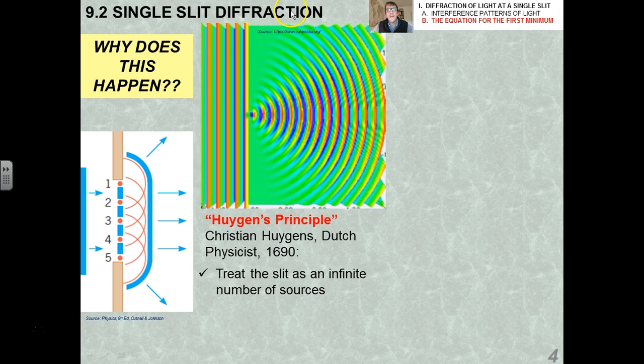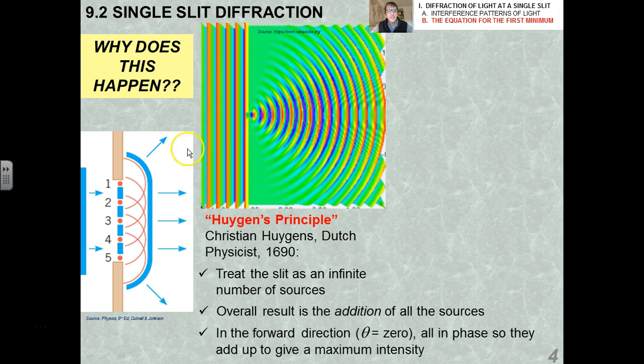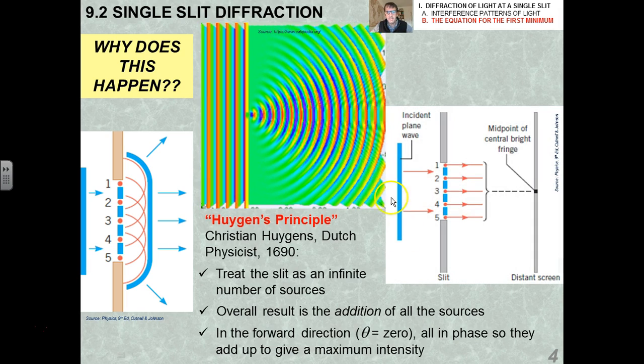So I want to go back a little bit to why does diffraction even happen? Well, in 1690, a Dutch physicist named Christian Huygens came up with an idea, which is now known as Huygens Principle. And what he said was, if we treat the slit as an infinite number of sources, so in this case we have five little what he called wavelets, like little individual waves. The overall result is the addition or superposition of all of those sources on the screen. It turns out that in the forward direction along this axis, all of those little wavelets are actually in phase, so they add up to give a perfect maximum intensity.